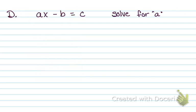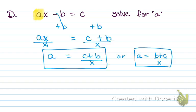This one you're going to solve for A — pause and try it. Here I moved over the B first, plus B on both sides. Notice I could have had C plus B or B plus C — because it's adding, it doesn't matter which one comes first. It would matter if it was subtraction. Then I divide by X to get A alone. So my answer is A equals C plus B divided by X, or equivalently B plus C divided by X.